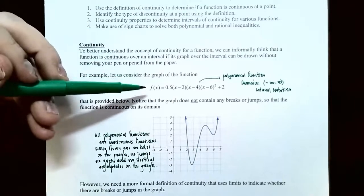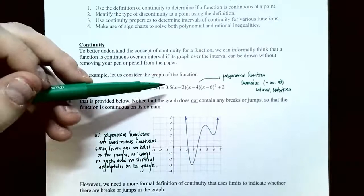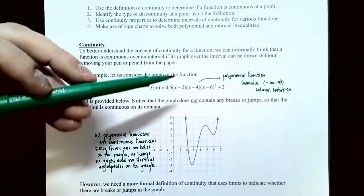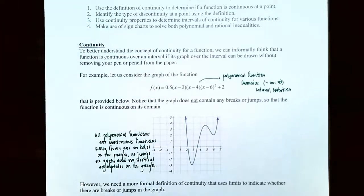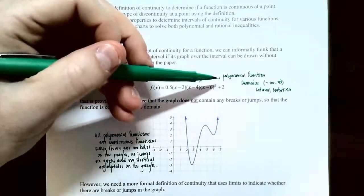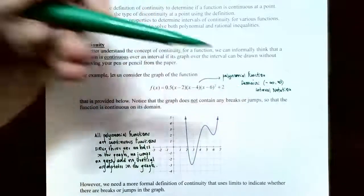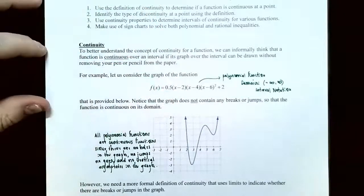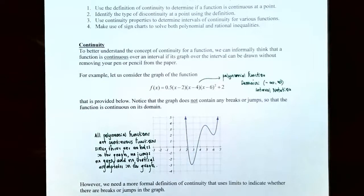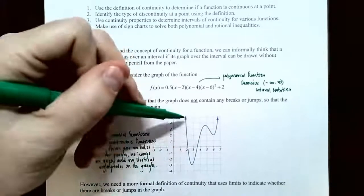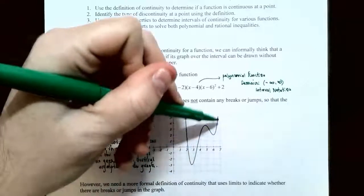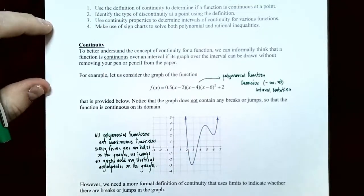For example, if you have the function f of x equals 0.5 times x minus 2 times x minus 4 times x minus 6 all squared plus 2, we know that this is a polynomial function. The domain of a polynomial function is negative infinity to infinity. Notice that this graph has no breaks, no jumps, no holes, and no vertical asymptotes. So I can draw this graph with one continuous motion of my pencil or pen, meaning the function is continuous by looking at the graph.